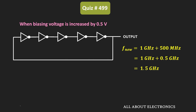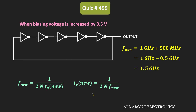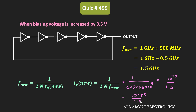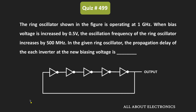At this new oscillation frequency, let us find the propagation delay of each inverter. The oscillation frequency of the ring oscillator is given by the same expression, and rearranging, the new propagation delay equals 1 divided by 2N times the new oscillation frequency. That is 1 divided by 2 times 5 times 1.5 GHz, which equals 100 picoseconds divided by 1.5, giving us 66.6 picoseconds. So the new propagation delay of the inverter is 66.6 picoseconds. I'll see you next time.